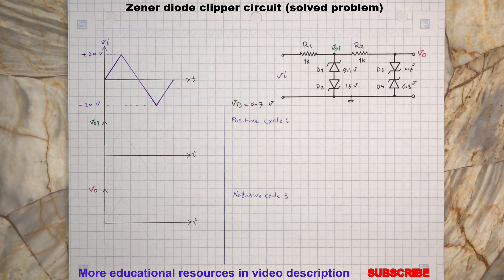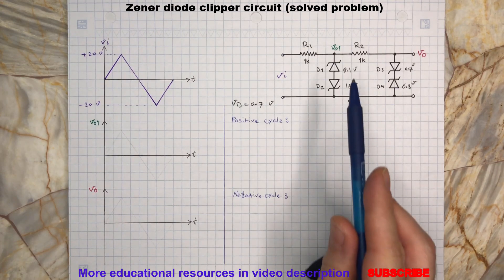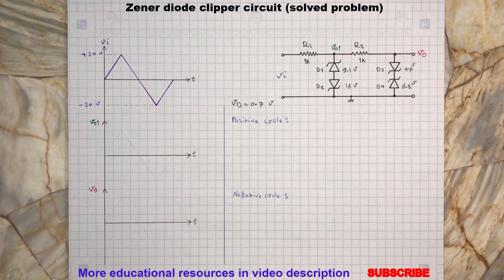Both D1 and D2 will start conducting and hold the voltage constant at 9.8 volt at the v01 terminal. This will continue until the input voltage falls below this value.